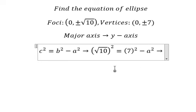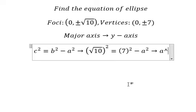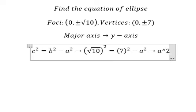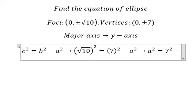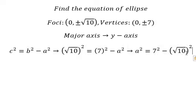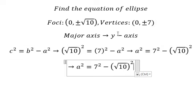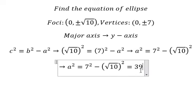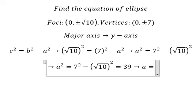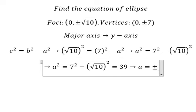Now I'll put a² on the left and this on the right to find the value of a. If we calculate, we get 39. We take the square root of both sides and we have a = ±√39.